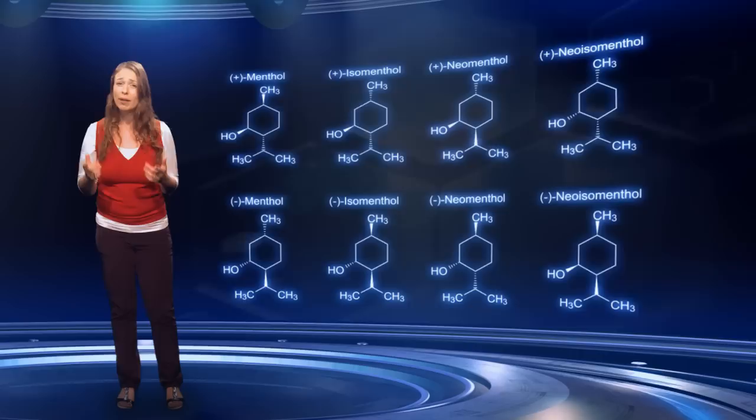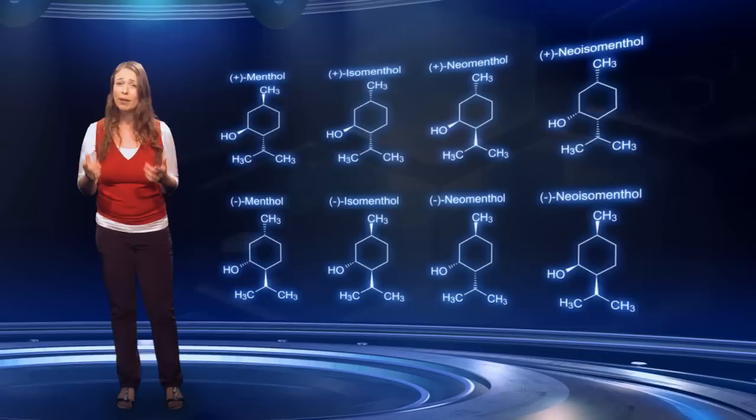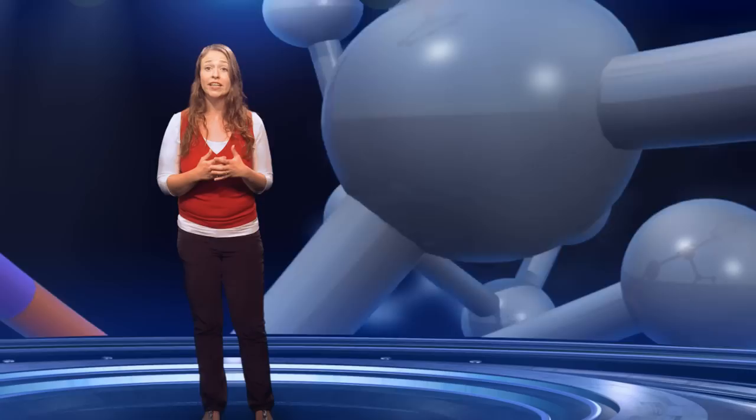There are actually eight different stereoisomers of menthol possible, but using a special type of catalyst based on the metal rhodium, it is possible to produce it selectively as a single isomer, as we can see here. The homogeneous rhodium catalyst can be made in a single chiral form, and this is what determines the product isomer.